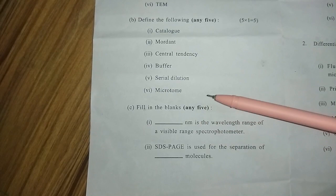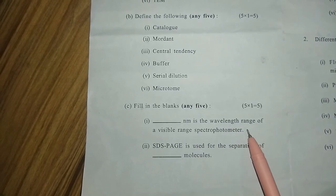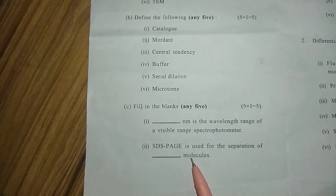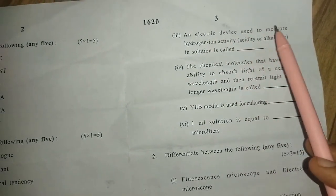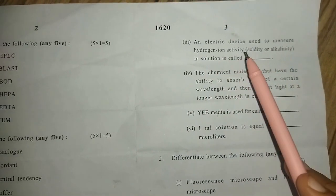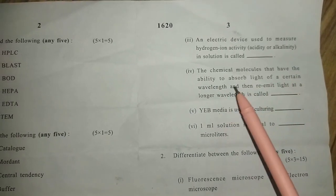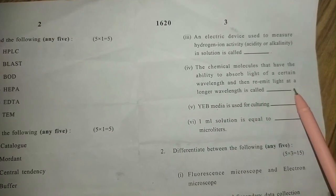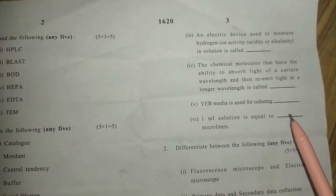Part C is fill in the blanks. One: dash nm is the wavelength range of a visible range spectrophotometer. Two: SDS-PAGE is used for the separation of dash molecules. Three: an electric device used to measure hydrogen ion activity, acidity or alkalinity in solution is called dash. Four: chemical molecules that have the ability to absorb light of a certain wavelength and re-emit light at a longer wavelength is called dash. Five: YEB media is used for culturing dash. Six: 1 ml solution is equal to dash microliters.